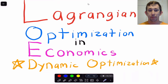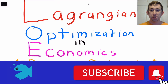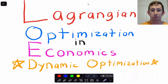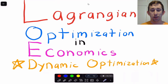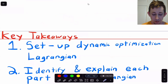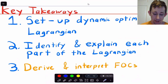Hi guys, welcome back to A Case of Econ Struggles. Today is part three of the Lagrangian Optimization Miniseries. What I want to talk about is dynamic optimization — specifically dynamic optimization for a fixed time period. This is not going to be t equals zero to infinity; this is going to be for a set number of periods from t equals zero to T. We're going to run through an example, set up the Lagrangian, identify each part, talk about first order conditions, and discuss why we need to be careful when taking first order conditions for a dynamic optimization problem. Timestamps are below if you'd like to jump around.